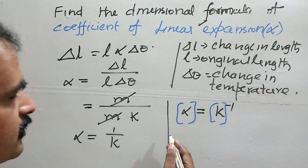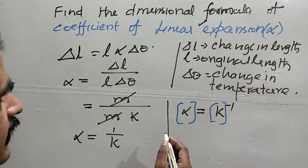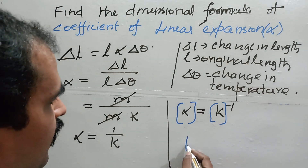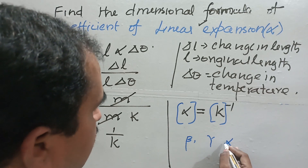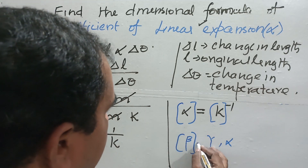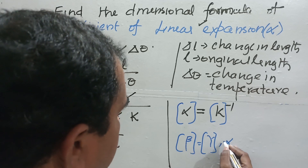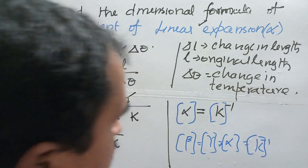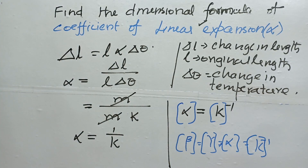The same dimensional formula applies to the aerial expansion coefficient beta and the volume expansion coefficient gamma. So alpha, beta, and gamma all share the same dimensional formula: K to the power minus 1. Alpha is one-dimensional, beta is two-dimensional, and gamma is three-dimensional expansion. Thanks for watching the video.